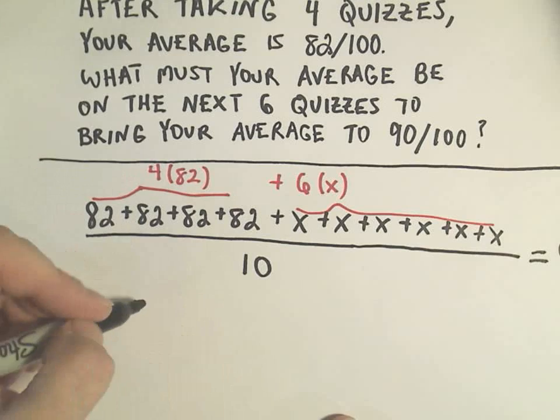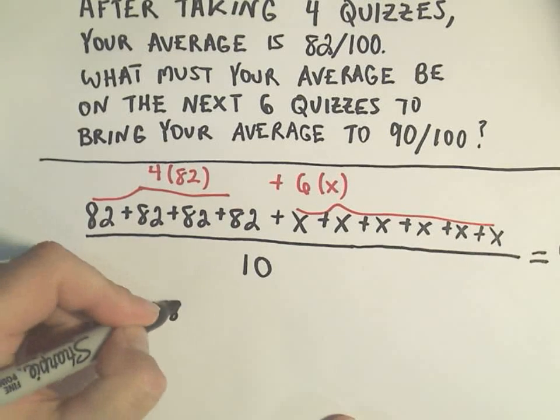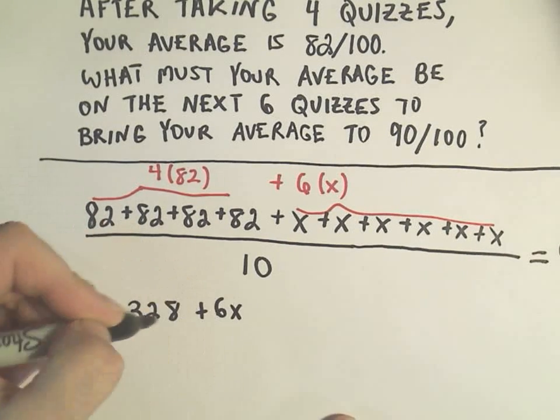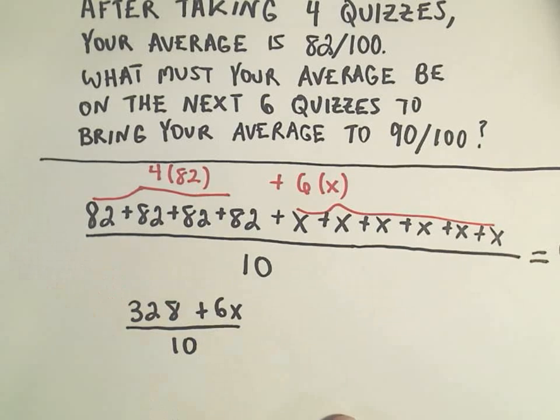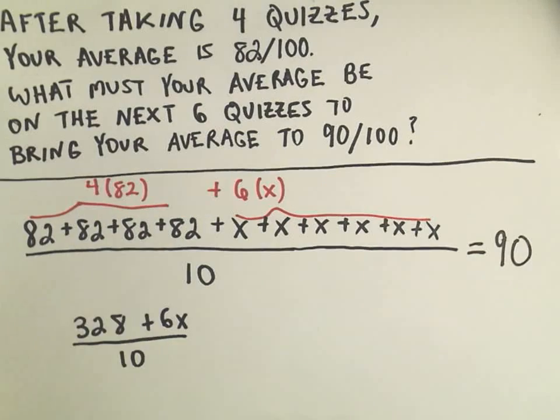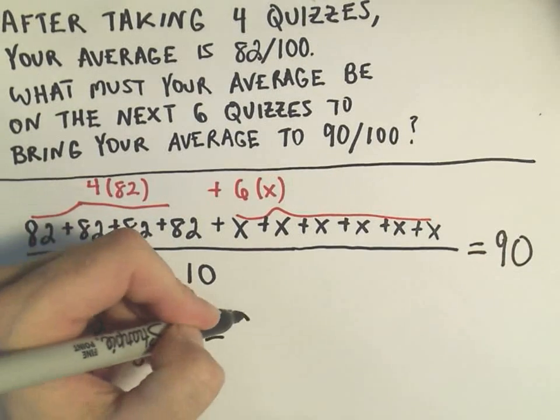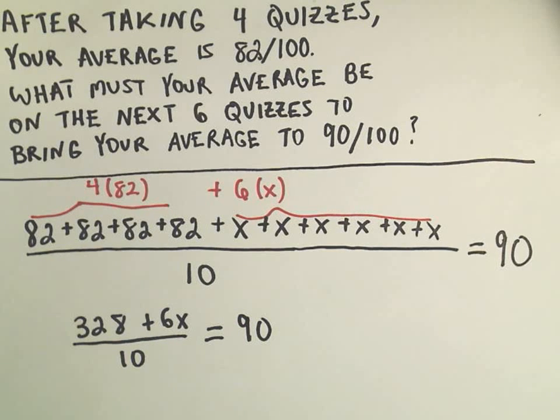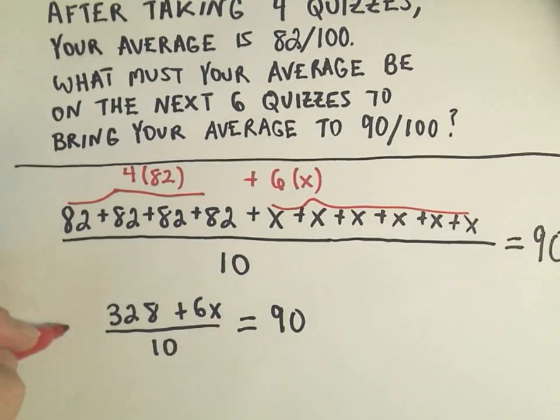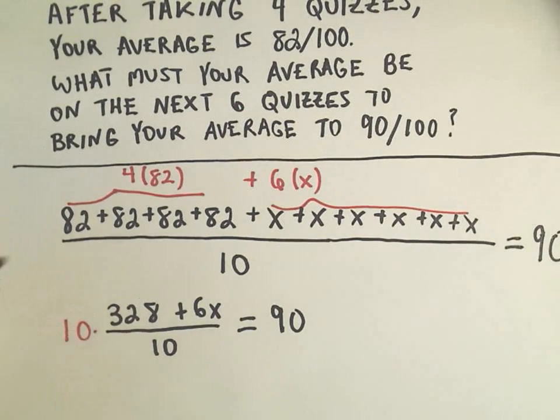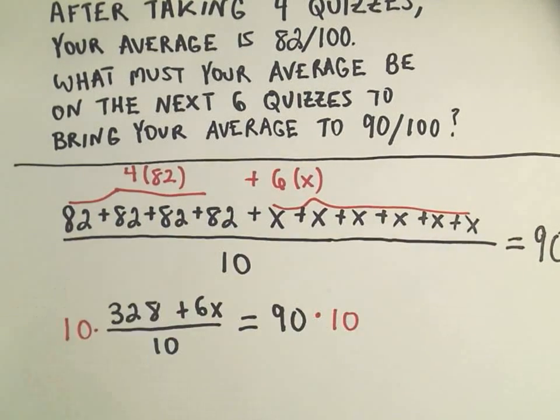So if you take four times 82, that's going to be 328 plus 6x. We've still got our ten in the denominator, and again, we want that to equal 90. So now, kind of a linear equation, hopefully not too bad to solve. I want to get rid of this ten in the denominator. So I'm simply going to multiply both sides by ten.